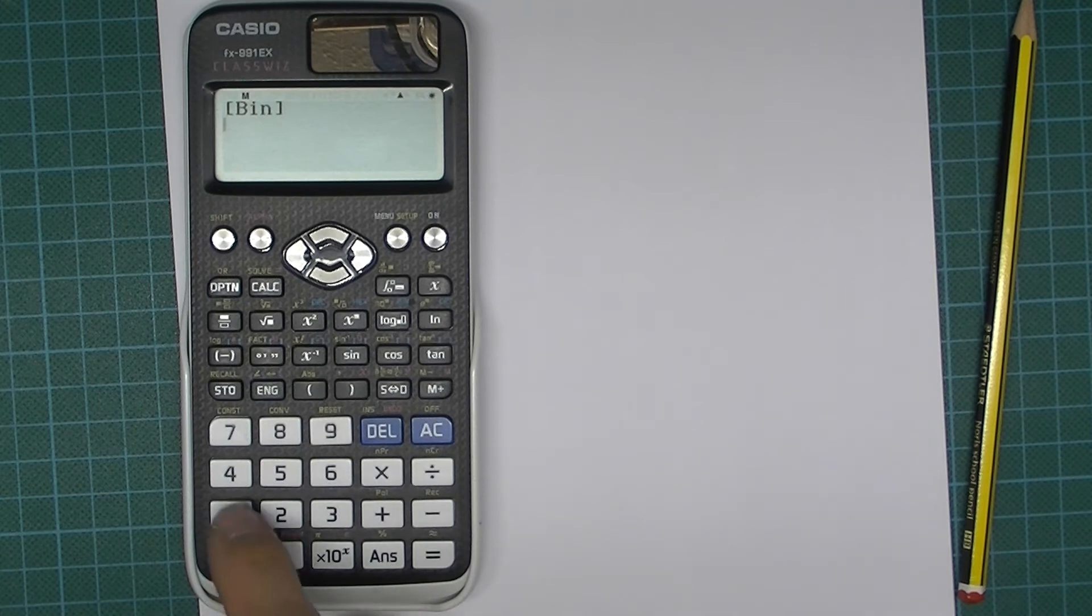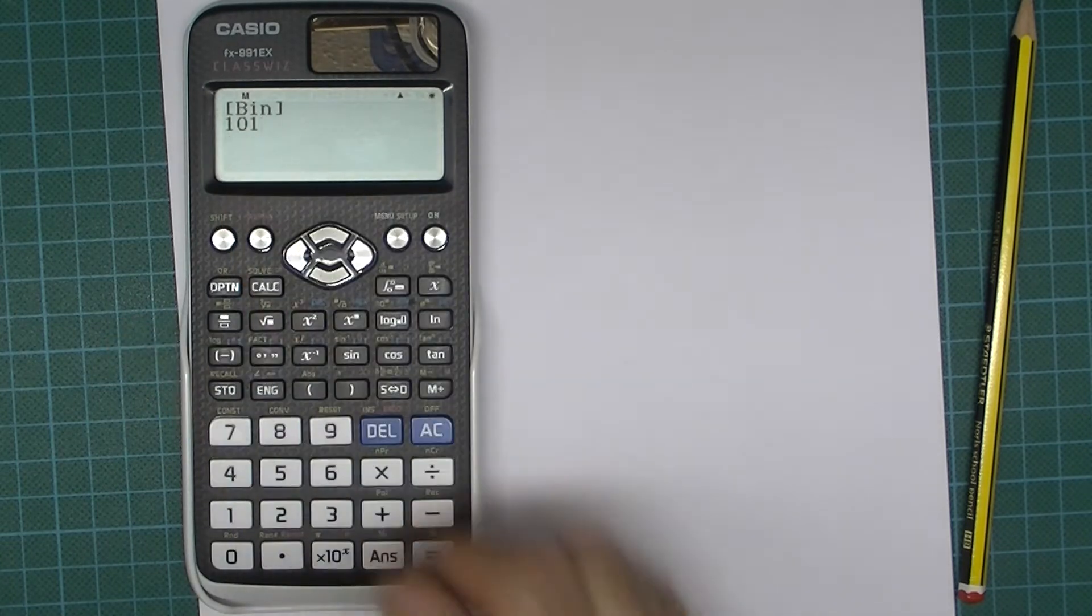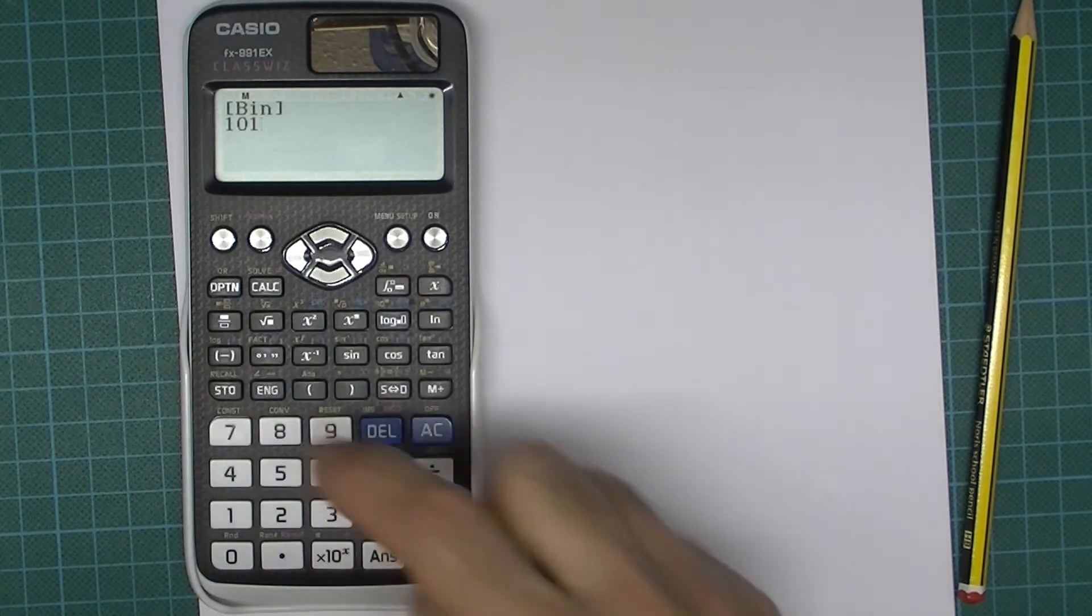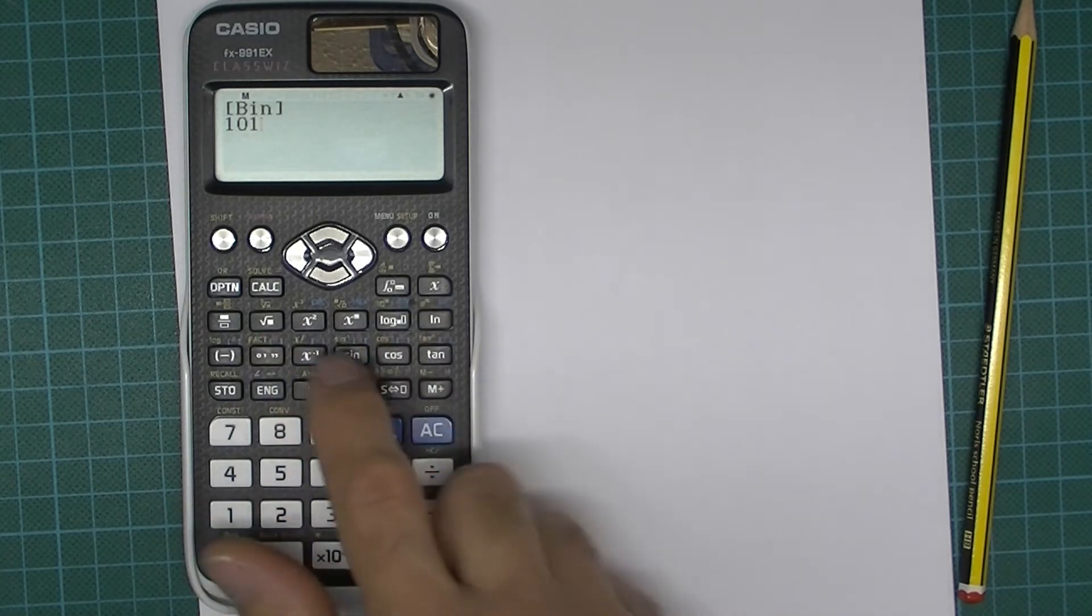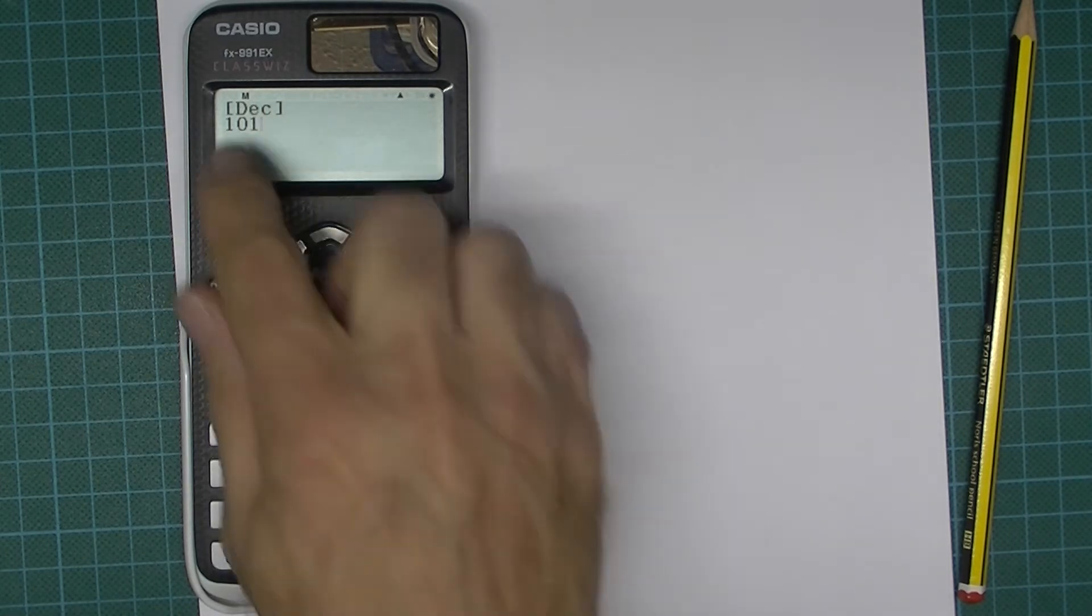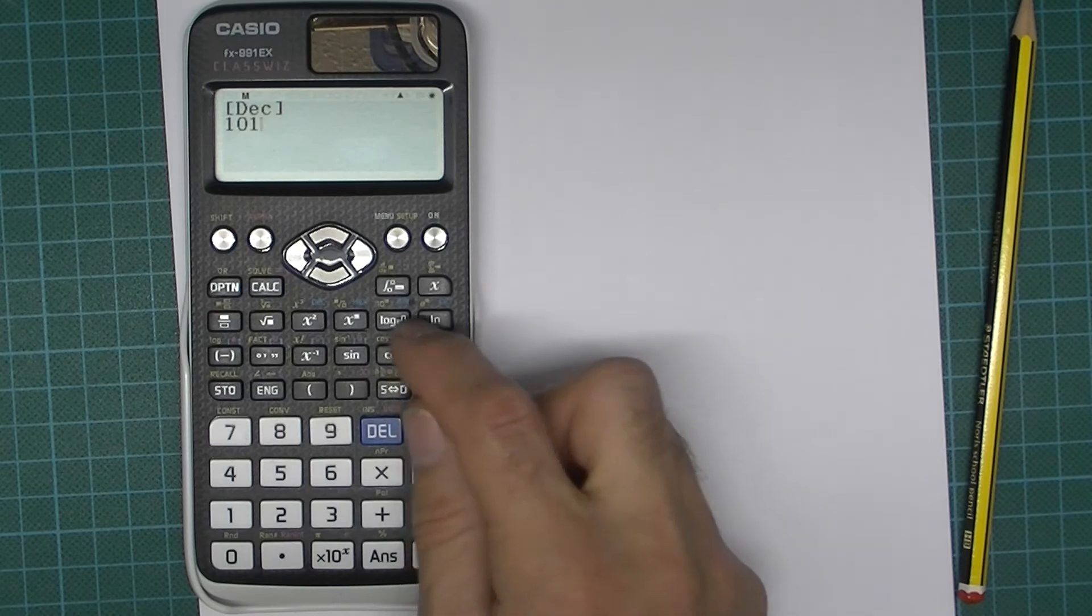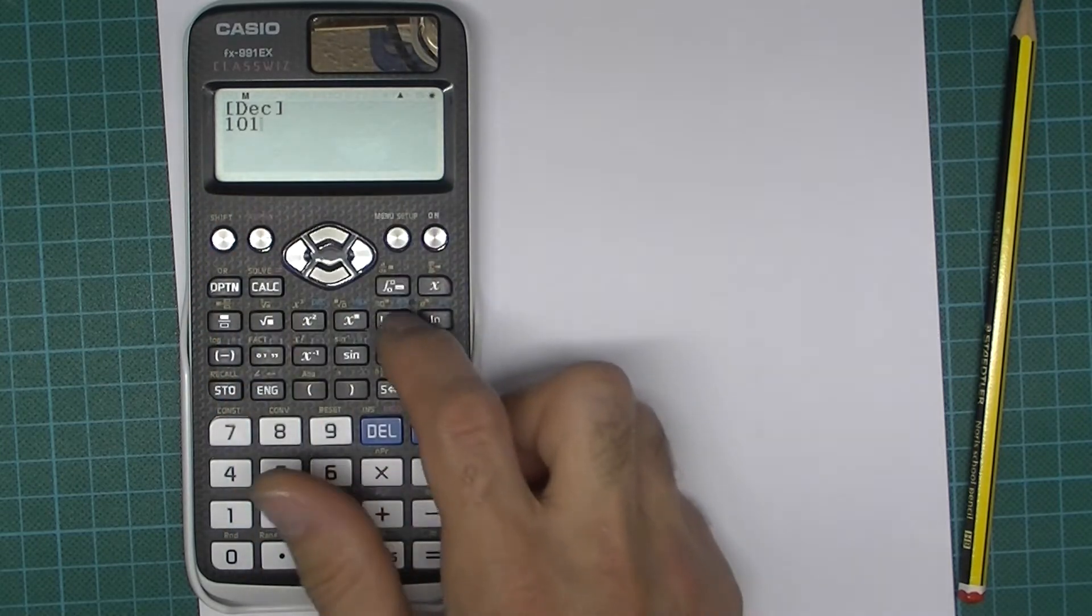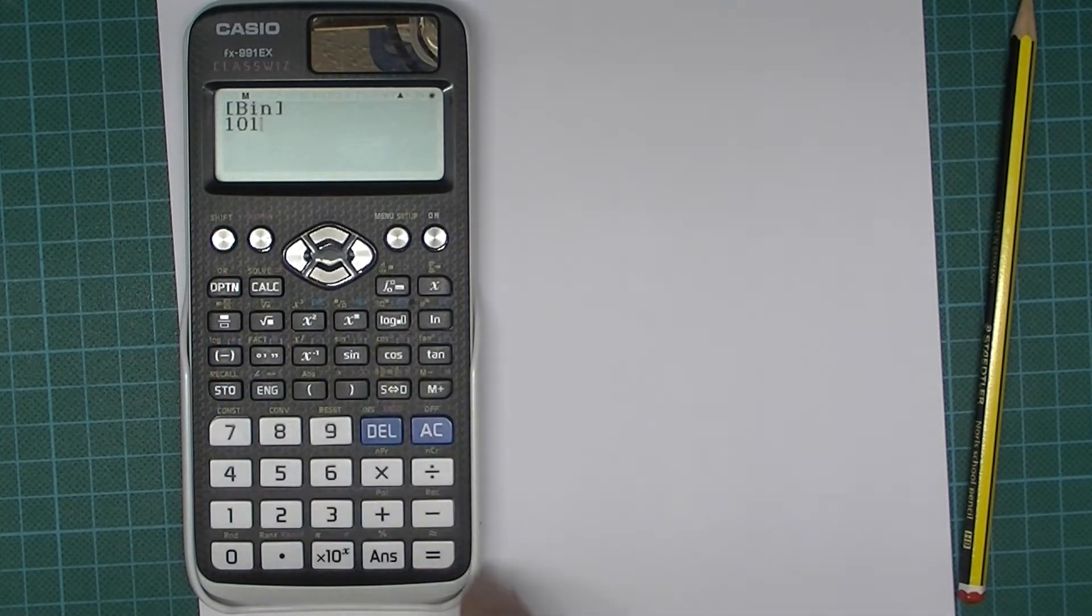If say I did 101 in binary and then I want to convert that into decimal, oh actually no, if you just hit decimal that's not going to work. If you try that it still shows you 101 which is a valid 101 number in decimal. Let's just go back to binary, you've got to press enter, that's one important thing.